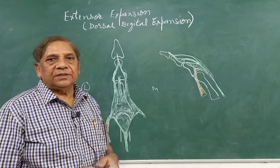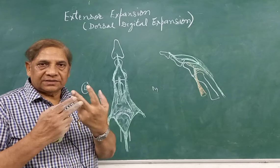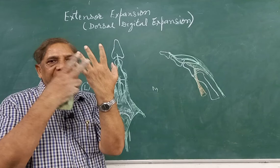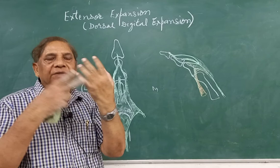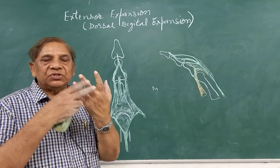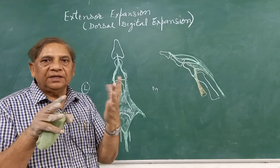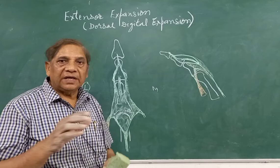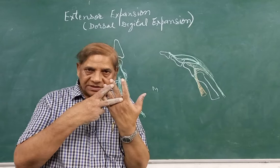Why is it called the dorsal digital expansion? These are the dorsal side of the fingers — that is called 'digital.' On the dorsal aspect, the extensor tendon, which is called the extensor digitorum tendon, goes to the dorsal aspect — the back side of the hand — and there it forms an expansion. The tendon becomes expanded. This expansion is the insertion of the extensor digitorum tendon, which is called the dorsal digital expansion or extensor expansion.